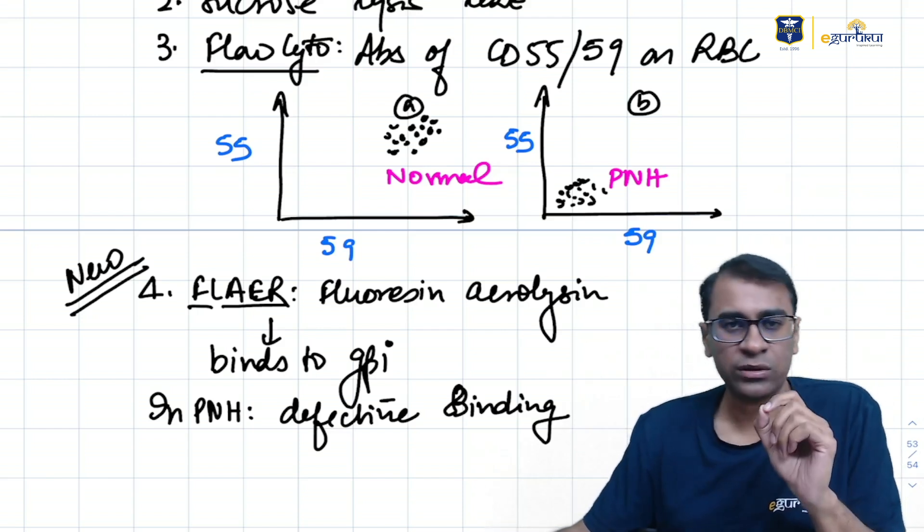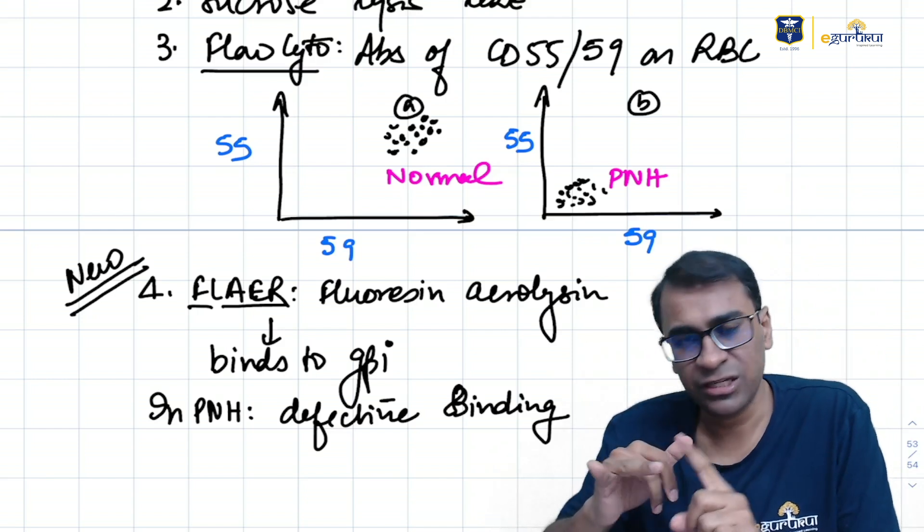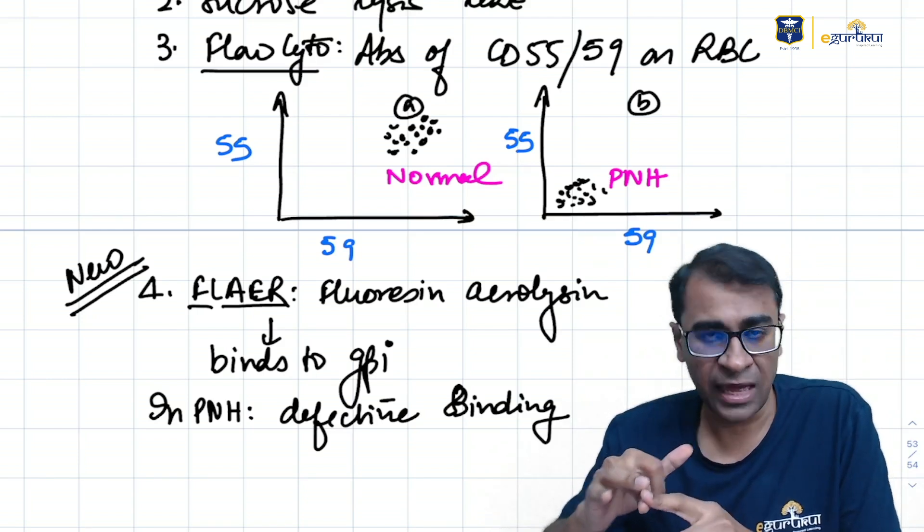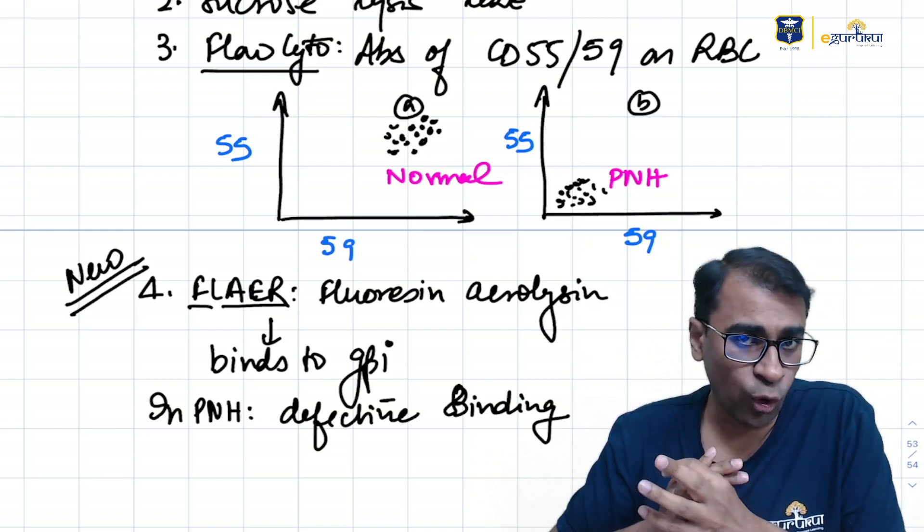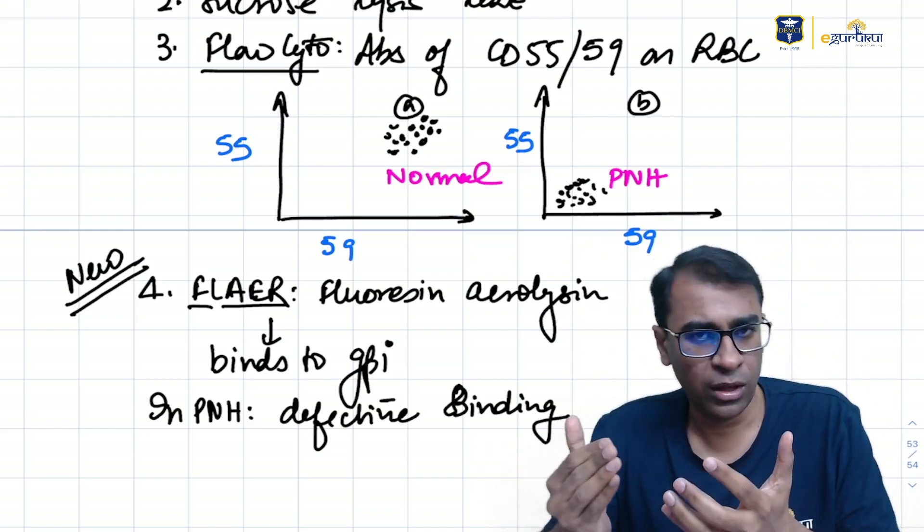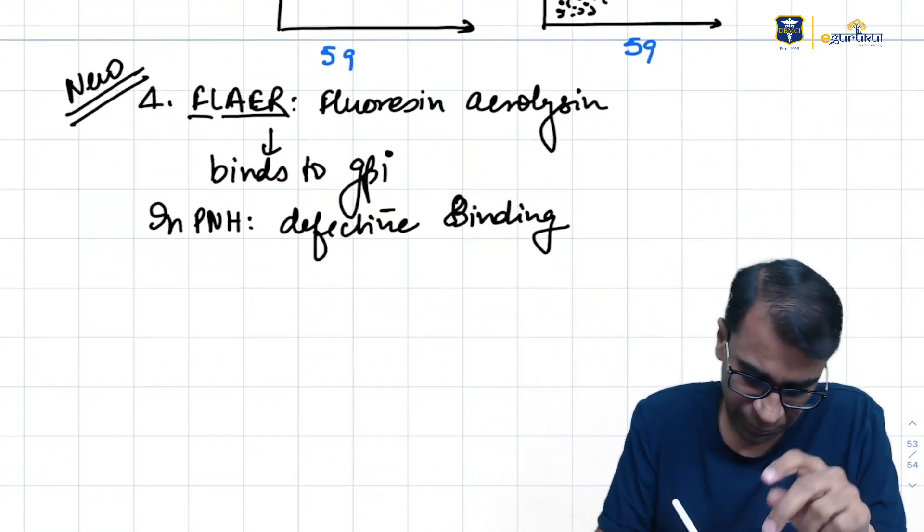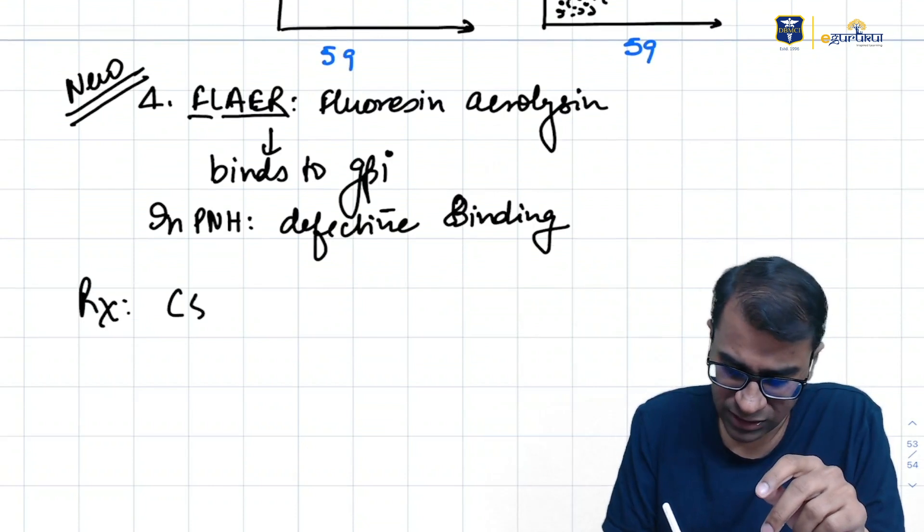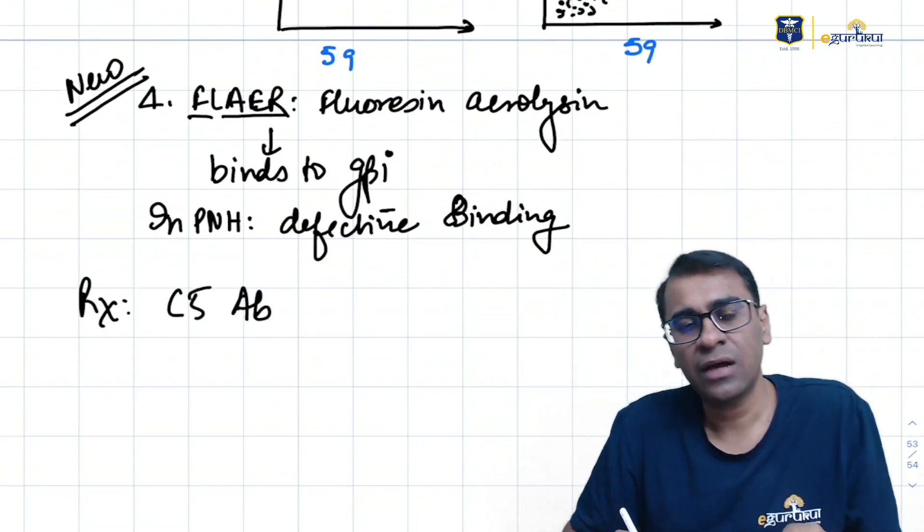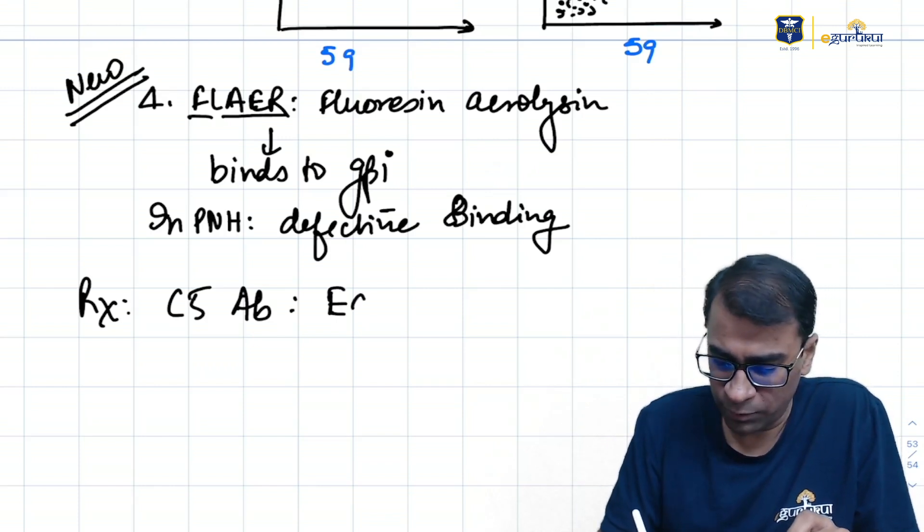Till now, the diseases we discussed—HS, G6PD, thalassemia, sickle cell—are all basically inherited etiologies. You can't do anything about it. But PNH is an acquired mutation. What is the treatment here? We can give a C5 antibody which can inhibit the activation of C5. This antibody comes by the name of Eculizumab.